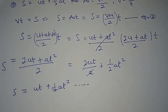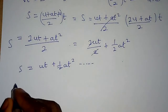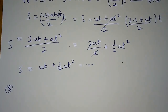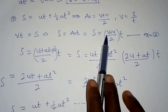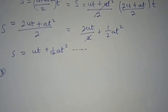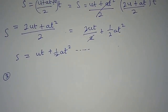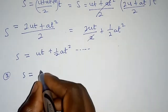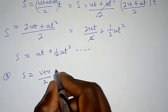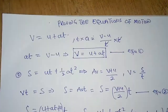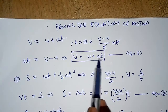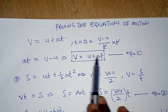Let's move on to the third equation of motion. To find it, recall that equation 2 is S equals V plus U over 2, multiplied by T, and equation 1 is V equals U plus AT. All we need to do is make T the subject from equation 1.